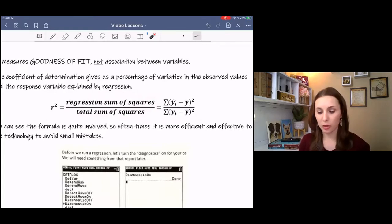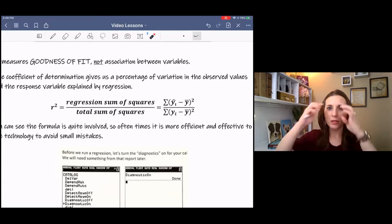And those are found by these formulas. You do ŷ minus the mean of y, square it, and do that for each value, add them all up. Then you do actual y minus the mean of y, square it, add them all up, and then divide. So it's actually not very hard to find the coefficient of determination by hand. It's just subtracting and squaring and adding. But if you have a large data set, it can be a little bit tedious.